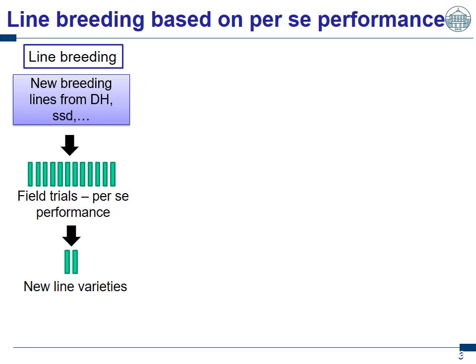My background is wheat and therefore I use the package for line breeding or hybrid breeding. I want to show you examples for hybrid wheat breeding. But to understand hybrid breeding a bit better, we should start with what is line breeding, and make the difference to hybrid breeding.